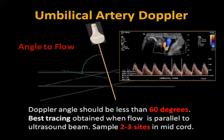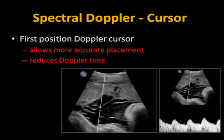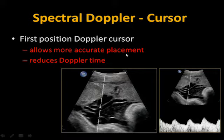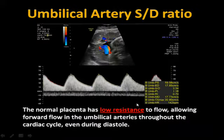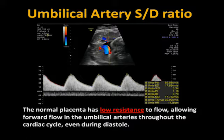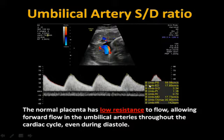Do two to three different sites. If one artery shows increased resistance, make sure you sample the other artery. Place your color on and then try to place your gate in the middle of the artery. The normal placenta should have low resistance to flow, allowing forward flow in the umbilical arteries throughout the cardiac cycle, even through diastole. We want to see high forward flow — we should always have high forward flow.